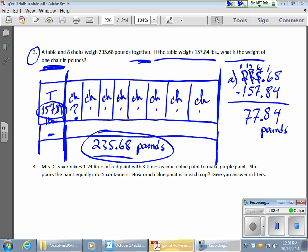Now this number represents the total weight of my chairs. 77.84 pounds. Okay, lastly, if all 8 chairs give me a total of 77.84 pounds,